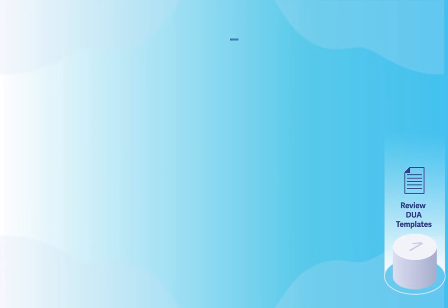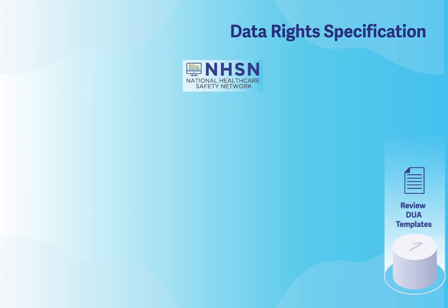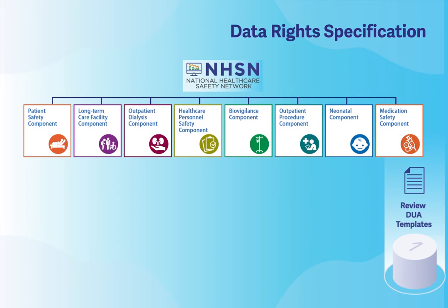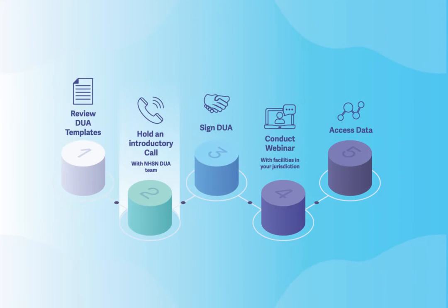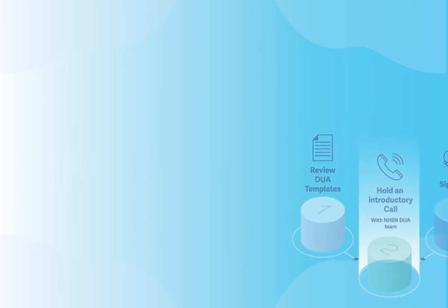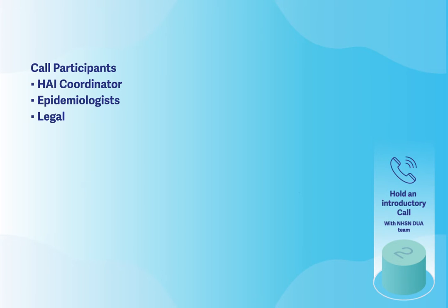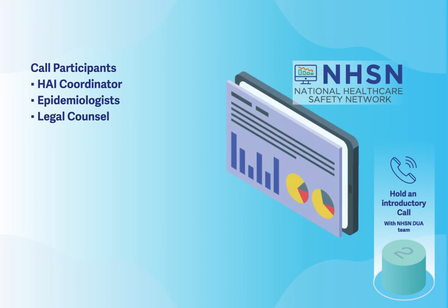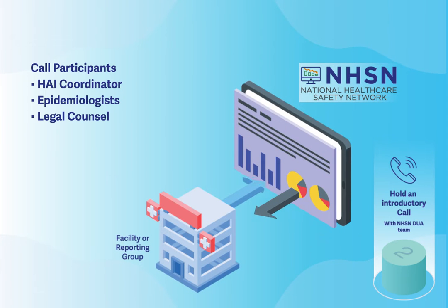Additionally, you will need to fill out the Data Rights Specification document to tell us the types of data from each NHSN component we should share with your health department. Next, we will schedule an introductory call between your health department and the NHSN DUA team. This should include your health department's HAI coordinator, epidemiologist, and legal counsel who will be involved in DUA discussions.